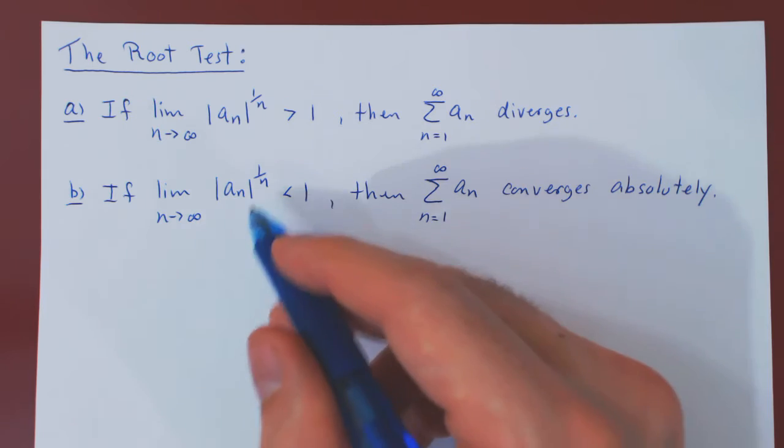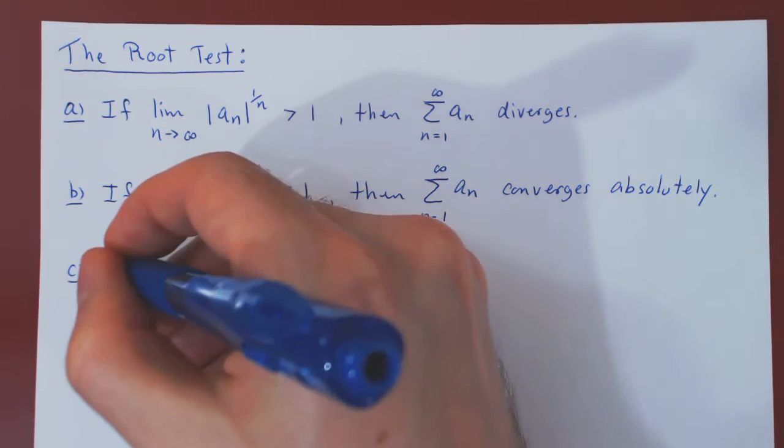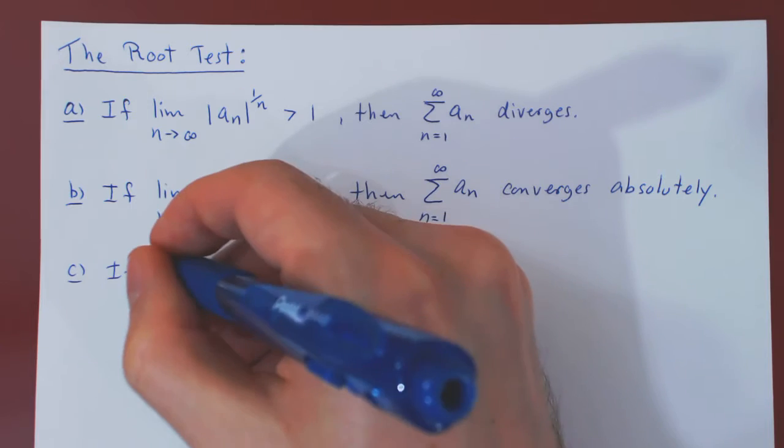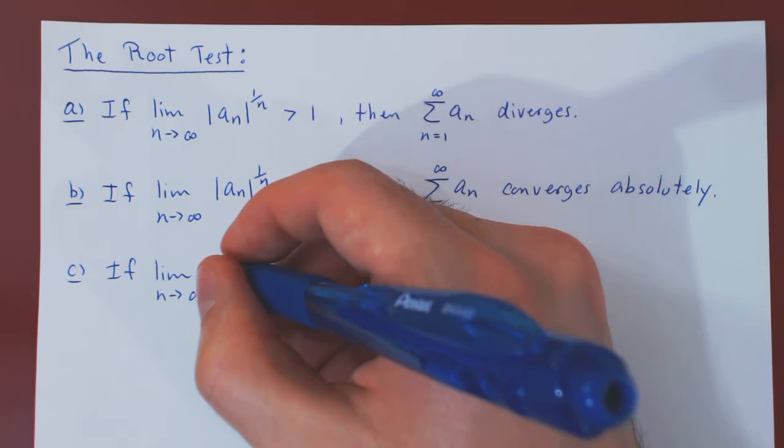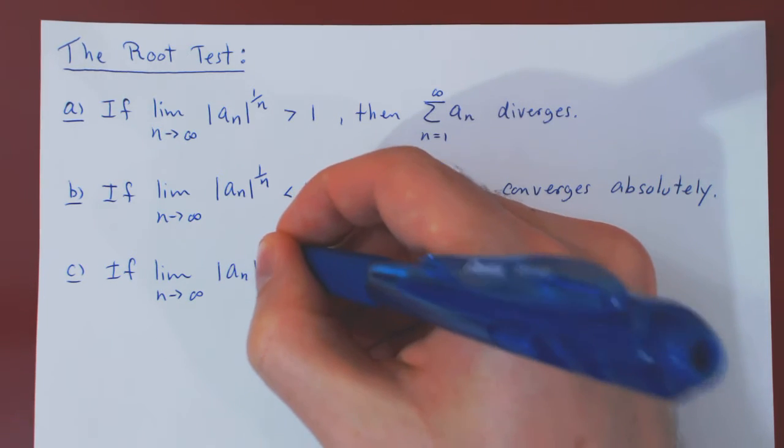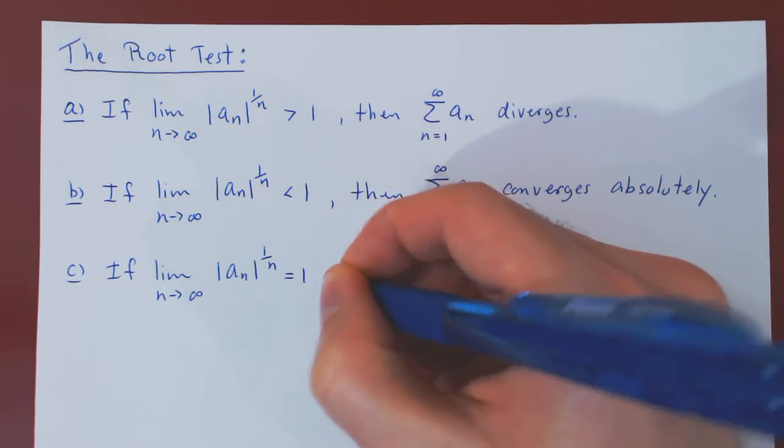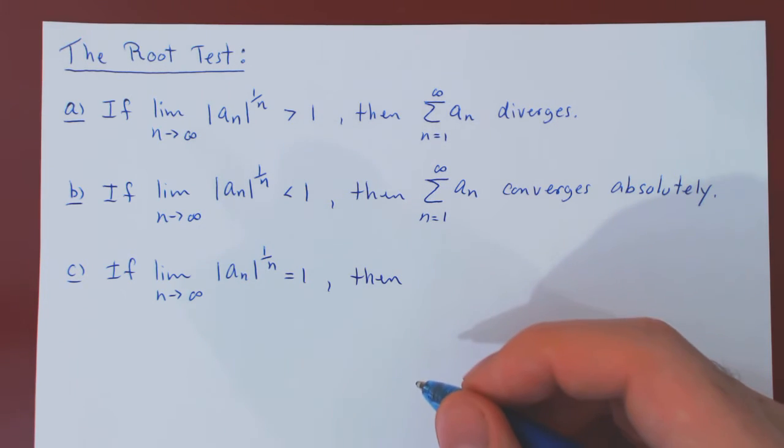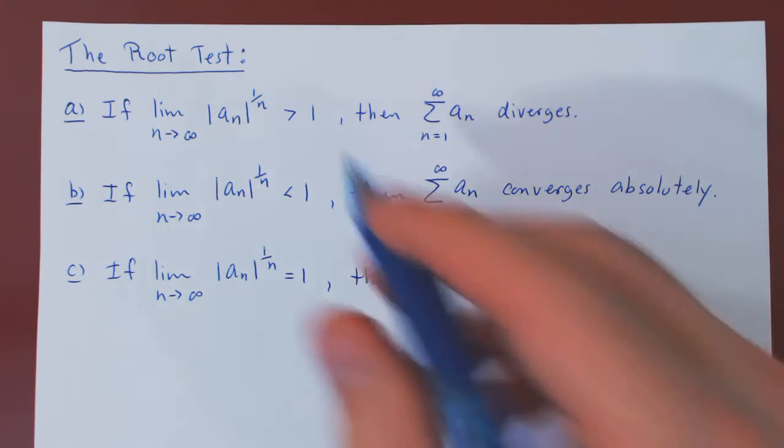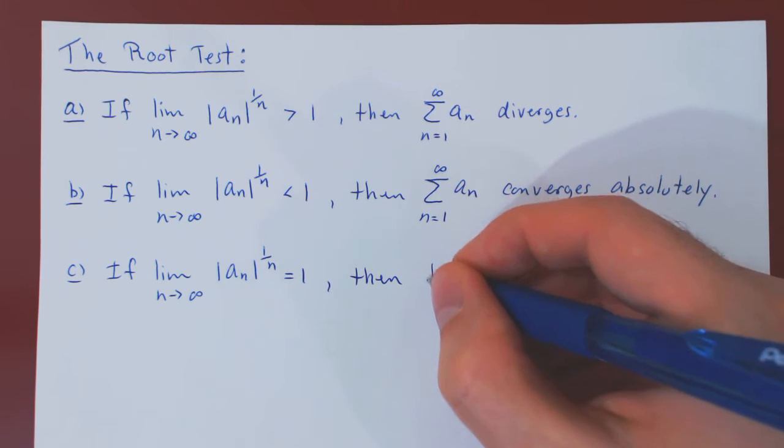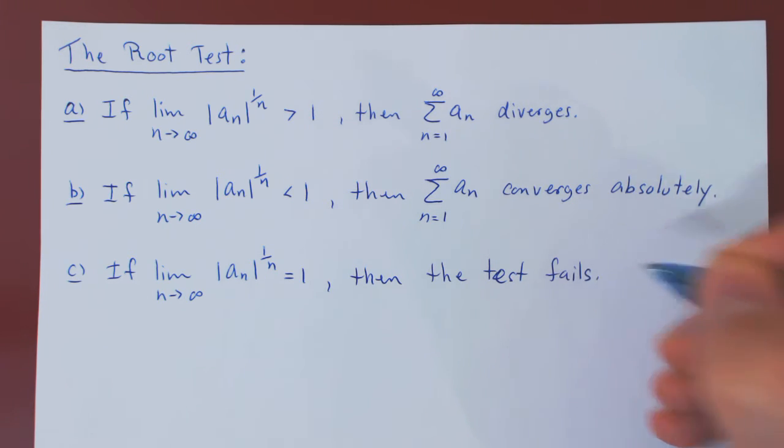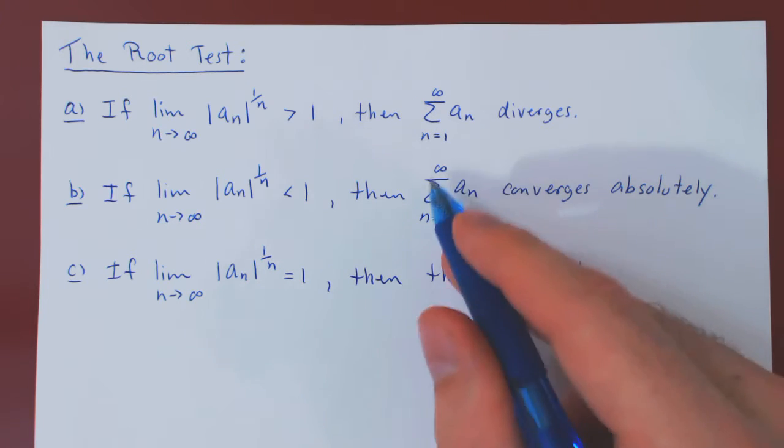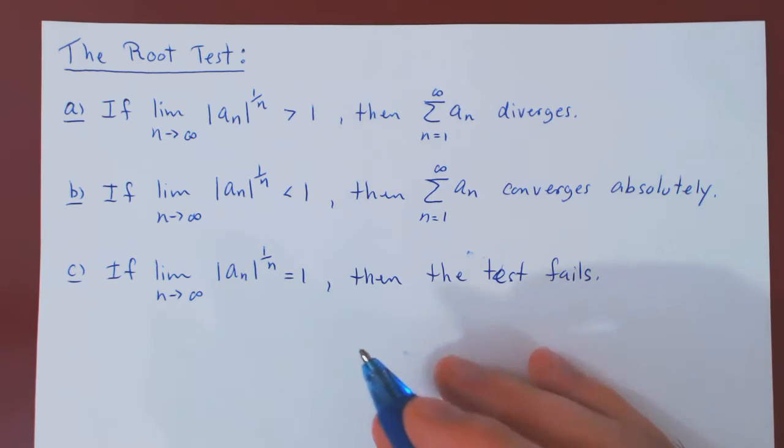And the third case, of course, if the limit is equal to 1, then just as in the ratio test, the root test fails as well. In this case, the series may converge or diverge, the test returns no information.